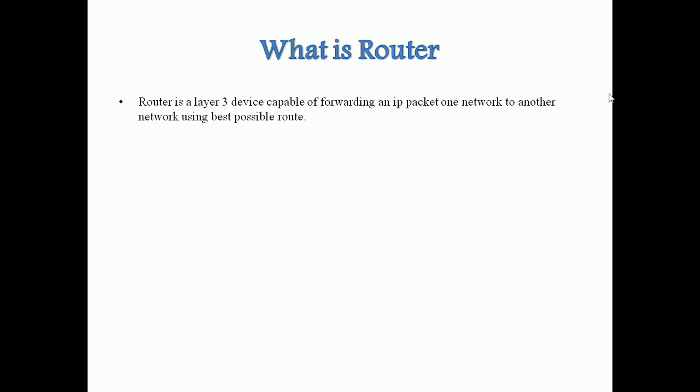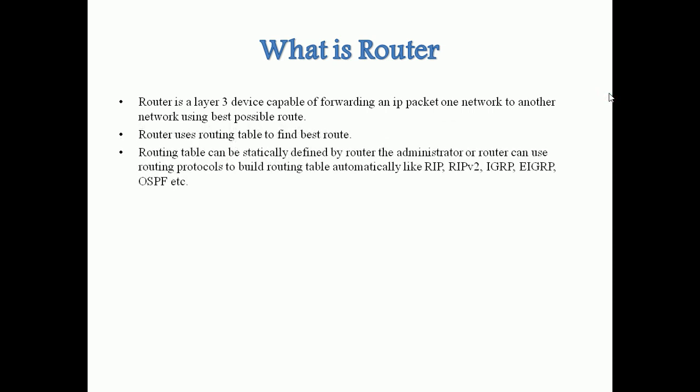The router forwards packets from one network to another network — it does not deliver the packet directly to the computer. The router uses a routing table to find the best route. But how does the router find the best possible route? It uses the routing table to determine that best route.